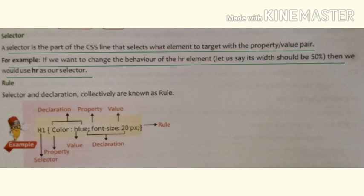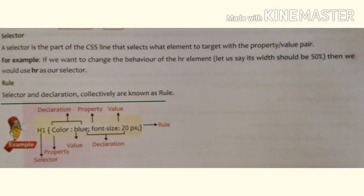The selector and declaration collectively are known as a rule. For example, if we use h1, that becomes our selector — the heading tag. Then inside curly braces: color is the property, blue is the value; together they form a declaration. Similarly, font-size is another property, 20px is its value, forming another declaration. So inside one selector we can have multiple declarations.